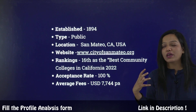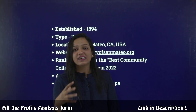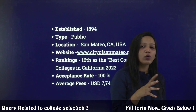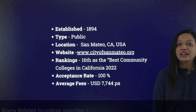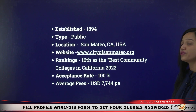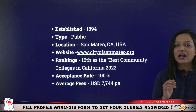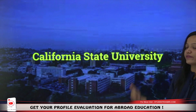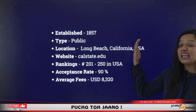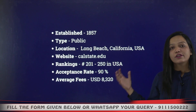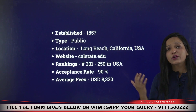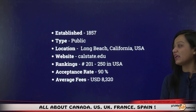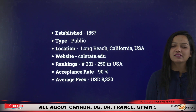The second college is California State University, established in 1857. It's in the public university category, located in California, USA. It has a 90% acceptance rate — meaning out of 100 applications, 90 students are able to make it. The average fees are $8,320 US dollars per annum.